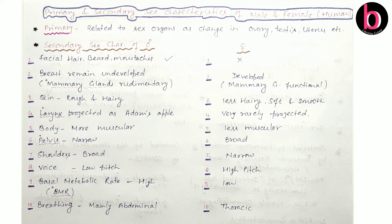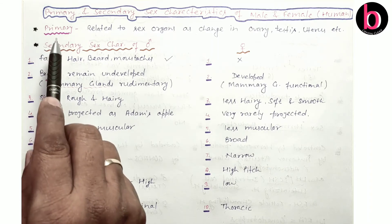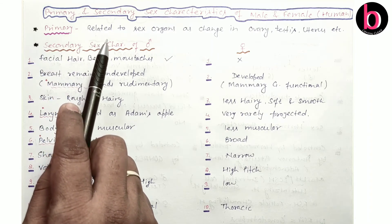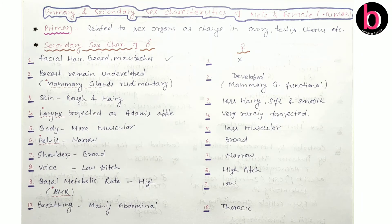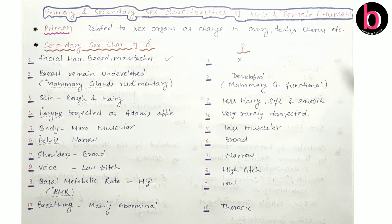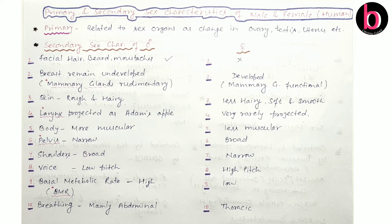Now, regarding primary and secondary sexual characteristics of male and female human beings — what are primary sexual characteristics? This is related with sex organs. Any change that occurs in the primary sex organs — ovary, testis — or in the secondary sex organs — like fallopian tube, uterus for female, and vas deferens for male — is known as a primary sexual characteristic.